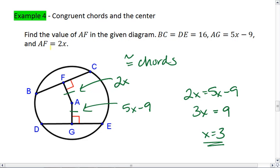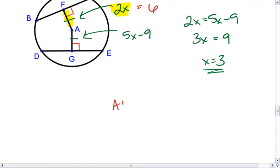However, our problem asks us to find AF. Since AF is 2X and X equals 3, then AF equals 6. So our final answer is that AF equals 6.